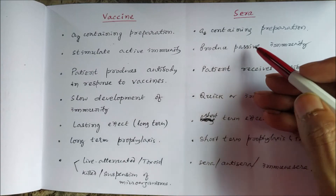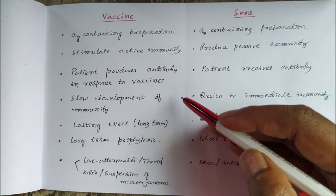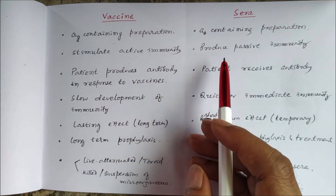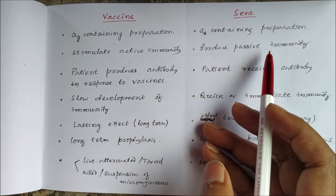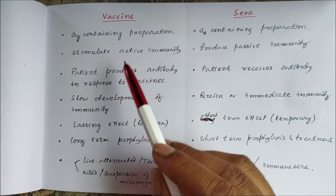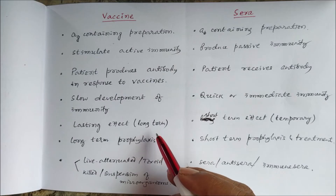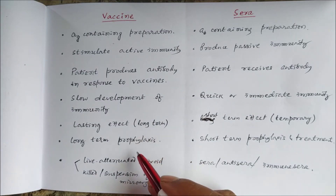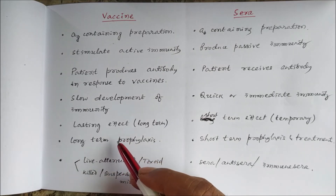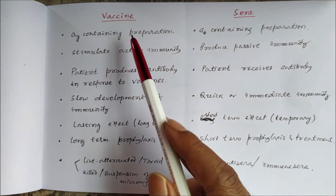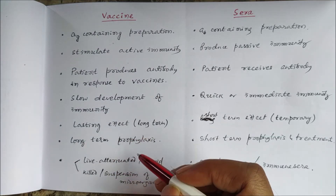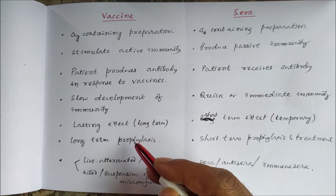Vaccines stimulate active immunity, and sera produce passive immunity. These vaccines have a lasting, long-term effect, and we can use them for long-term prophylaxis. In childhood, babies are given these vaccines so that they will produce antibodies in their body, and in the future they will not suffer from those diseases.